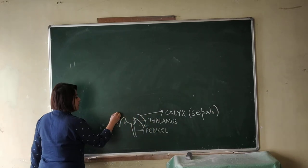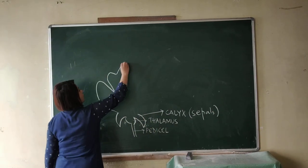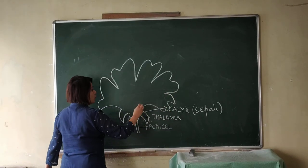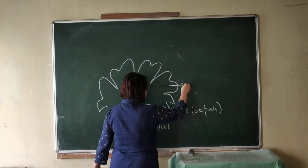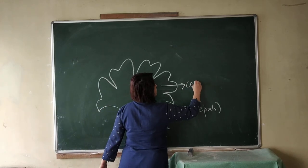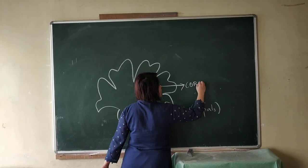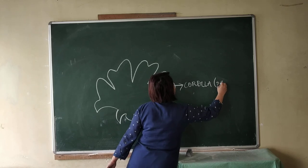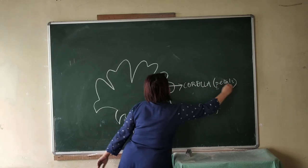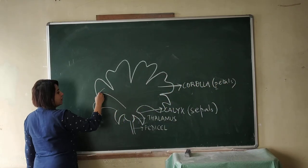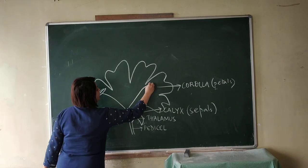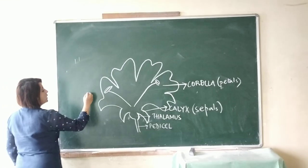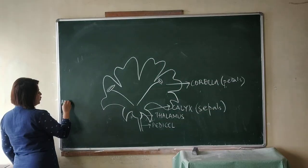Then we have the colorful petals, which form the second layer. They are known as the corolla, which is formed of the petals. Then the third layer consists of the male part of the flower, known as the androecium.